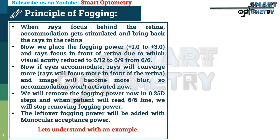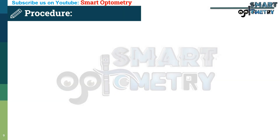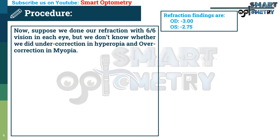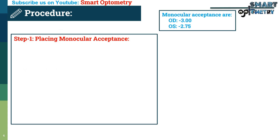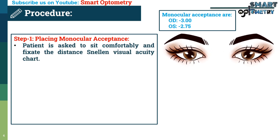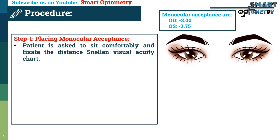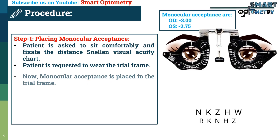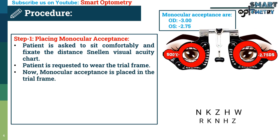Let's understand with an example. Suppose refraction was done with 6/6 visual acuity in each eye, but we don't know whether there was undercorrection in hyperopia or overcorrection in myopia. The findings are: right eye monocular acceptance minus 3, left eye monocular acceptance minus 2.75 diopters. Step one — placing monocular acceptance: the patient is asked to sit and fixate the distance visual acuity chart, wear the trial frame, and monocular acceptance is placed in the trial frame.